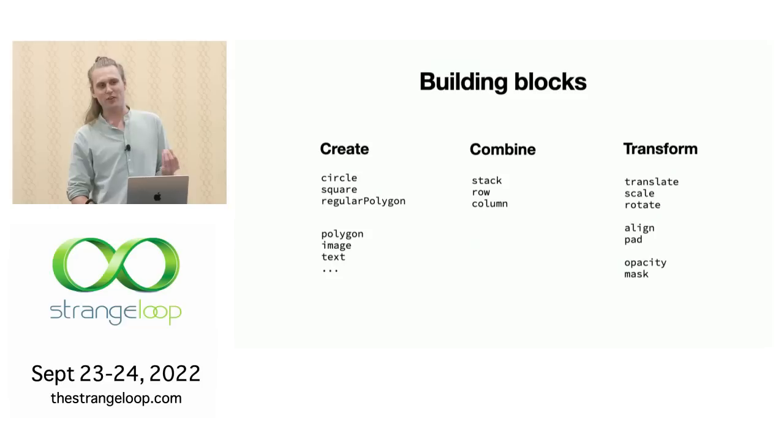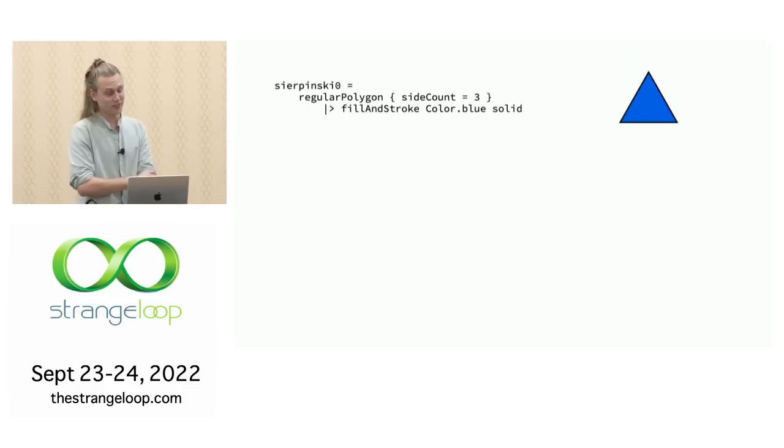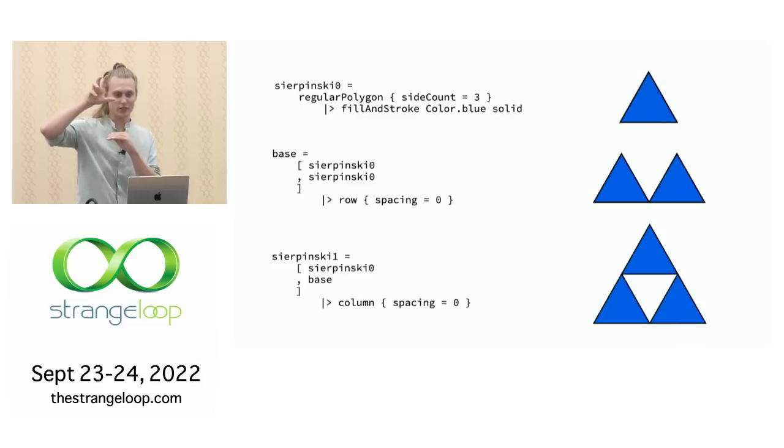But we also, we're working in Elm. We have a programming language at our disposal. So let's see what that can give us beyond just making this static image. I'm going to make the Sierpinski triangle. This is a fractal. It has multiple levels. It starts with just a triangle, equilateral triangle. And then you make holes in whatever triangles are left. We're going to go a few levels down. So I'm going to define Sierpinski zero, which is the base level of the Sierpinski triangle. It's just an equilateral triangle. And then I'm going to start constructing Sierpinski one by putting two of them together in a row with zero spacing so that they touch each other. And then I'll combine the base with another Sierpinski zero triangle and put them in a column. And now I've created the next level of the Sierpinski triangle.